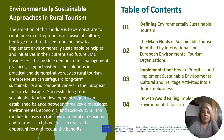So what are we going to be talking about in this module? The ambition is to demonstrate how rural tourism entrepreneurs in inclusive culture, heritage or nature-based tourism can implement environmentally sustainable principles and initiatives in their current and future SME businesses. This module demonstrates managing practices, support systems and solutions in a practical and demonstrative way so rural tourism entrepreneurs can safeguard long-term sustainability and competitiveness in their European tourism landscape.